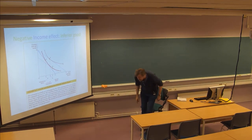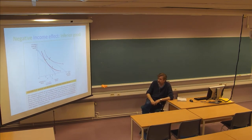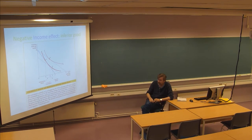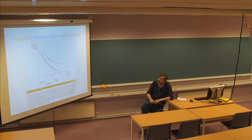As the text says: the consumer starts at A on budget line RS. With a decrease in the price of food the consumer moves to B. The change in food purchased can be broken into the substitution effect F1 to E — the move from A to D — and an income effect E to F2 — the move from D to B. Food is an inferior good here because the income effect is negative.